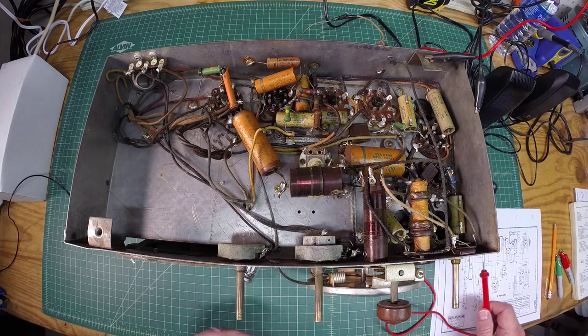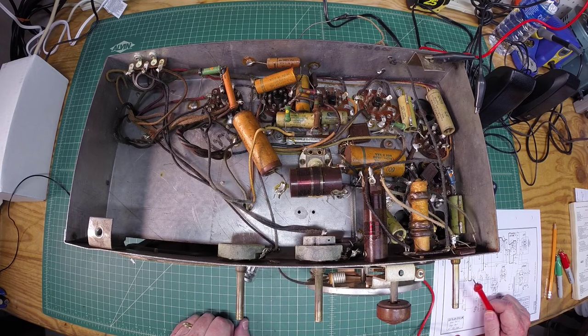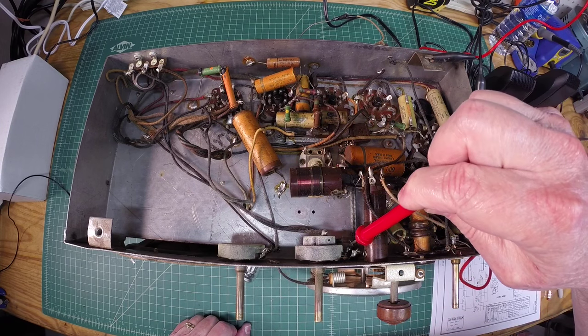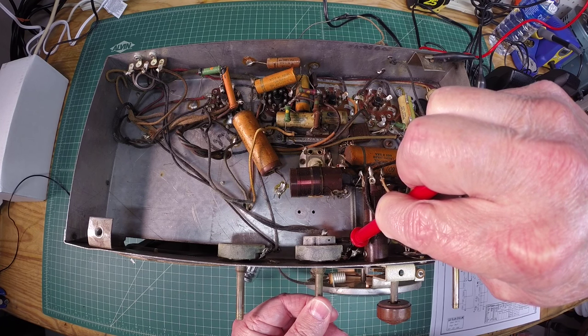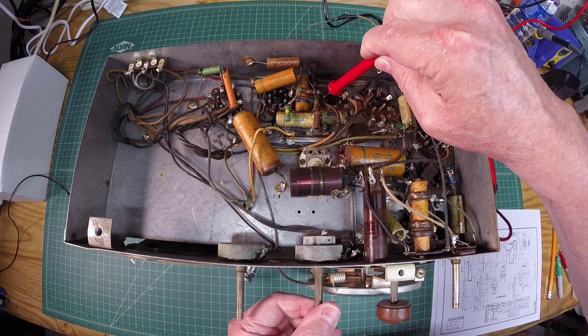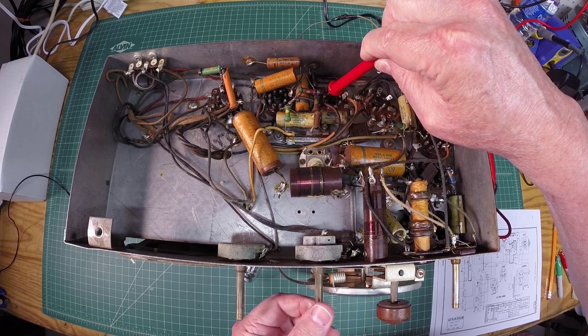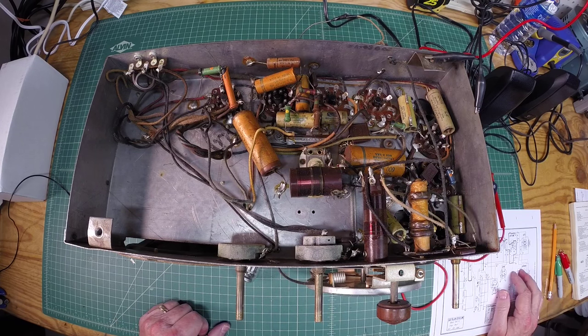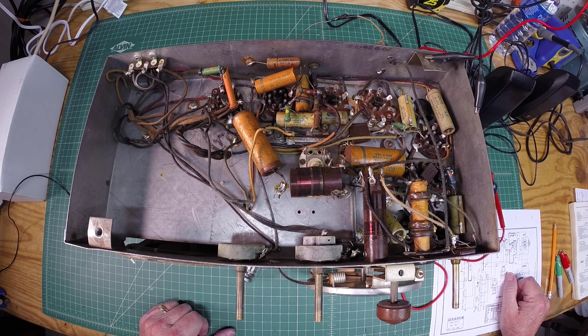So for whatever reason, it appears that the 6F5 tube itself, the grid sounds fairly good coming in. And when you go to the output, the output's extremely distorted. So I have not checked any of these tubes. So let me do that first.